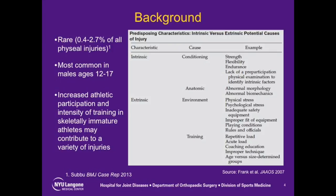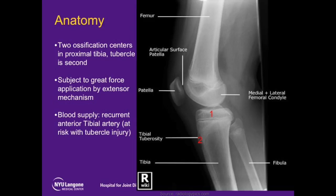In a skeletally immature patient, two ossification centers exist within the proximal tibia. Supplied by the recurrent anterior tibial artery, the tibial tubercle physis can be exposed to significant eccentric loads applied by the extensor mechanism during strenuous activity. These eccentric loads, generated by quadriceps contraction during cutting, pivoting, and jumping sports, can overwhelm the tibial tubercle physis, leading to an avulsion-type injury.